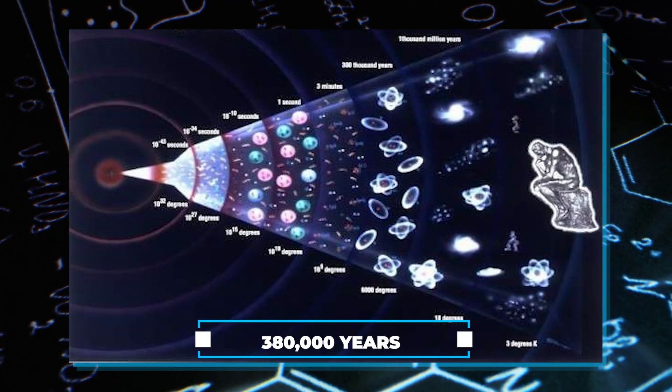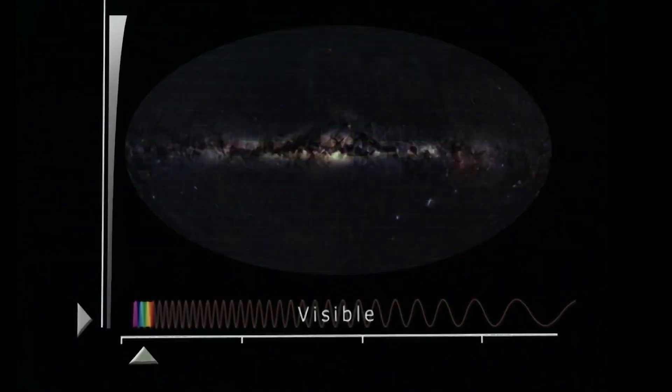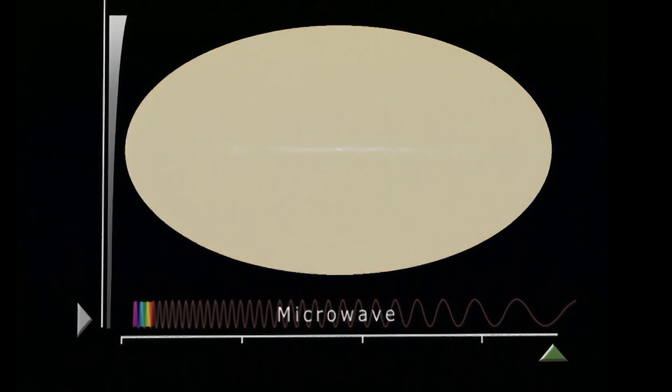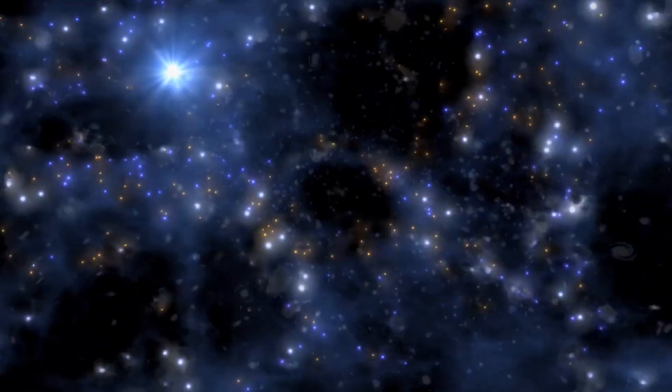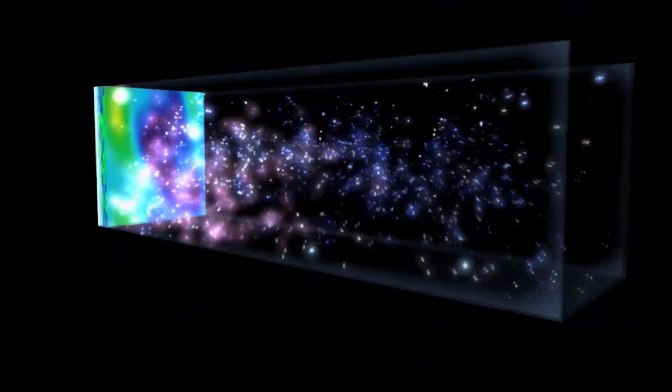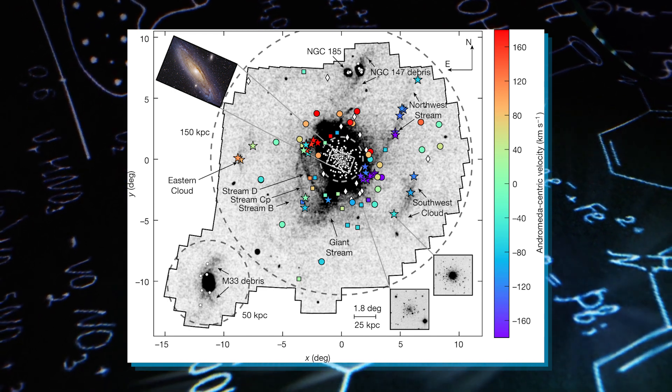About 380,000 years after the Big Bang, these photons were released, eventually shifting into the microwave range as the universe expanded, leading to the discovery of cosmic microwave background radiation. Anything before this era is beyond our observation, leading to the use of projections for insights into earlier epochs.